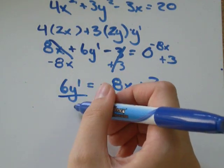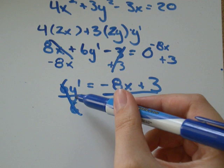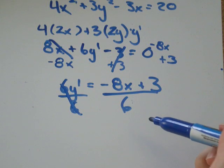All I need to do to get y prime by itself is divide both sides by 6, those will cancel out, and I'll get y' = (-8x + 3)/6. And that's the answer.